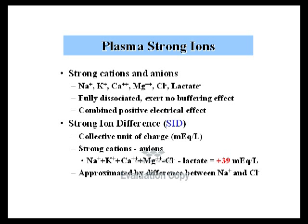Plasma strong ions refer to the strong cations and anions within the plasma compartment: sodium, potassium, calcium, magnesium, chloride, and lactate. They are fully dissociated and exert no buffering effect. Their combined positive electrical effect, algebraically added together, is referred to as the strong ion difference — a collective unit of charge in milliequivalents per liter, calculated as strong cations minus strong anions. Under standard physiologic conditions this value is 39 mEq/L, approximated by the difference between sodium and chloride.